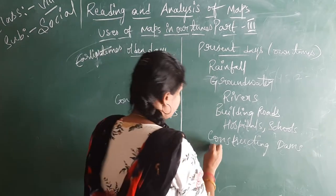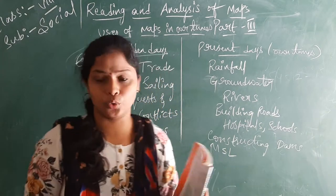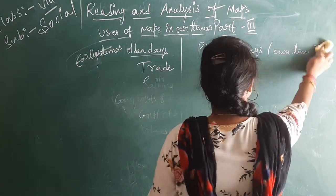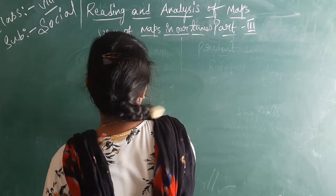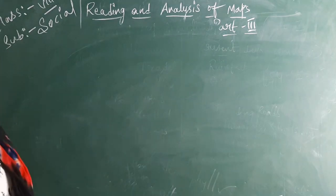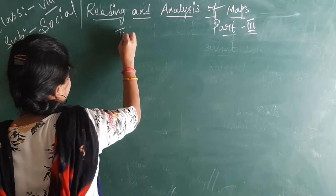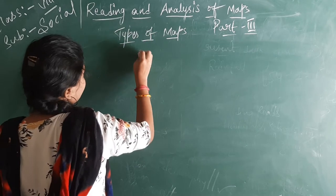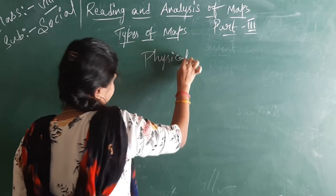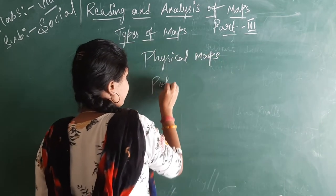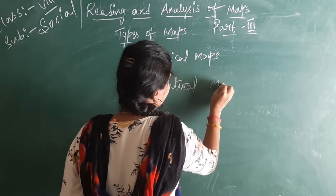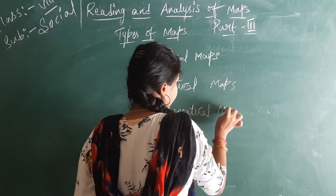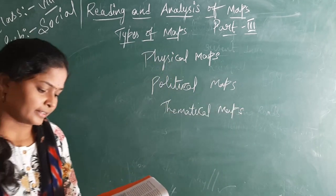Clear, children everyone? Next coming to how many types of maps are there? Types of maps. First is physical maps, political maps, and thematic maps.